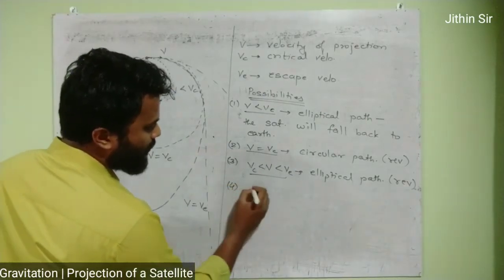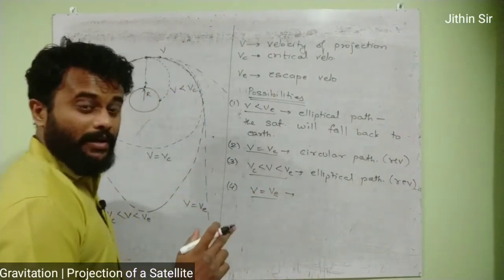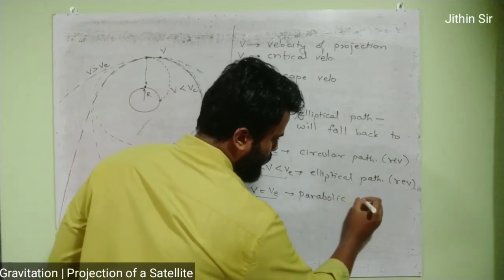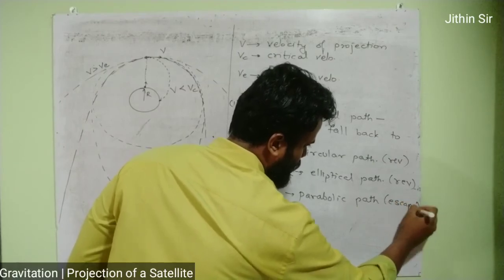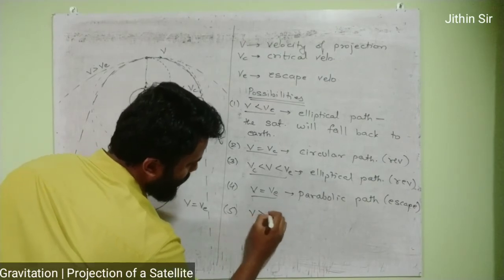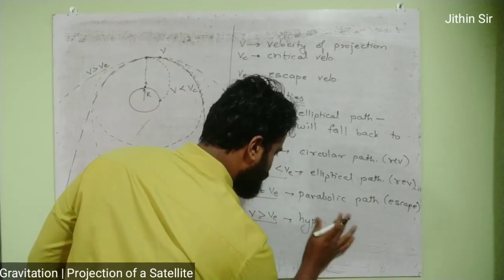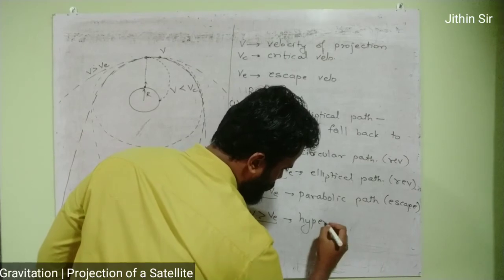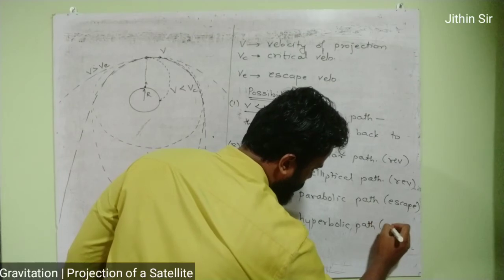Fourth case: when our velocity equals escape velocity, the satellite follows a parabolic path and escapes. Fifth case: when our velocity is greater than escape velocity, the satellite follows a hyperbolic path and escapes.